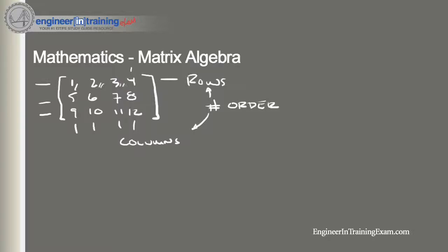The numbers that are defined in the matrix are called the elements. So all these numbers are elements within the matrix.